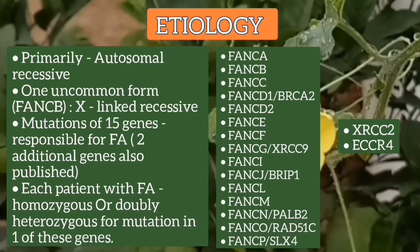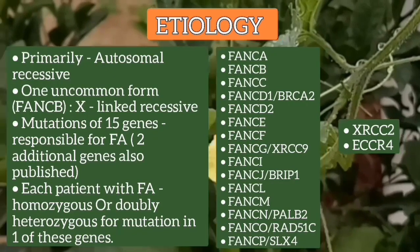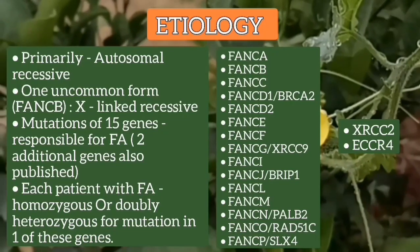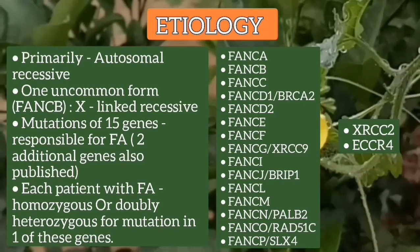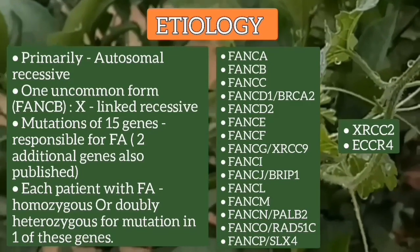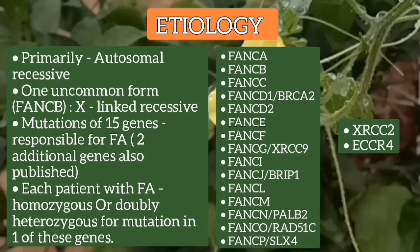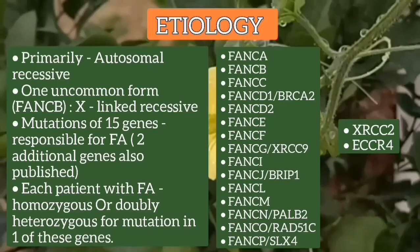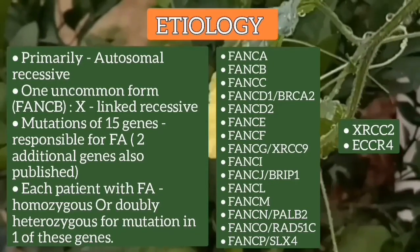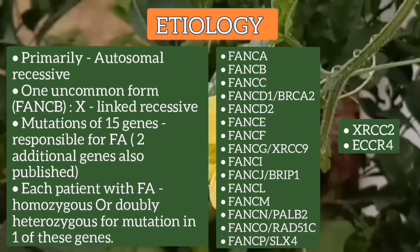One uncommon form, FANCB, is an X-linked recessive disorder. Each patient with Fanconi Anemia is homozygous or doubly heterozygous for a mutation in one of the 15 genes responsible for Fanconi Anemia. These 15 mutated genes are FANCA, B, C, D1 (also known as BRCA2), D2, E, F, G, I, J, L, M, N, O, and P. Two additional genes published are XRCC2 and ERCC4.